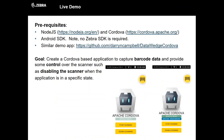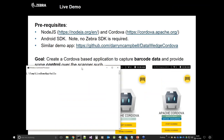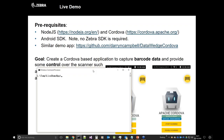For the demonstration, prerequisites are the same as any Cordova application. You need Node.js, you need Cordova — minimum version five for the part that Robin will be covering next, although for this particular piece of the demo I think anything as far back as Cordova 3 would suffice.